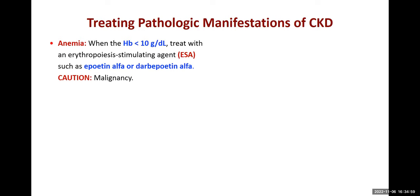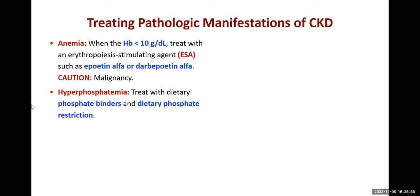Pathologic manifestations: for anemia, an erythropoiesis-stimulating agent — epoetin alfa or darbepoetin — is given only when hemoglobin falls below 10 g/dL. Normal hemoglobin is 13–17 g/dL in males and 12–16 g/dL in females. Caution is required in malignancies because these drugs stimulate cell division in the bone marrow. Hyperphosphatemia is treated with dietary phosphate binders such as lanthanum carbonate, dietary phosphate restriction, calcium supplements, or calcitriol.